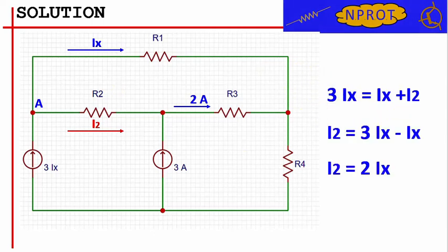Thanks to the expression just written, we can now express the value of I2 as a function of Ix. In particular, we have that I2 equals 3 times Ix minus Ix, from which we have that I2 is equal to 2 times Ix.